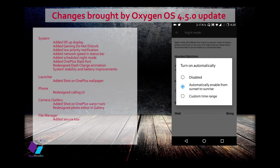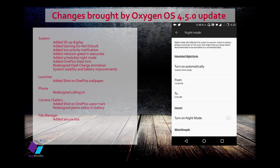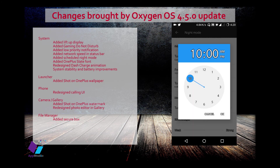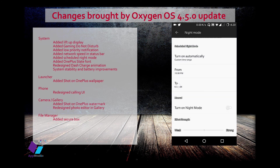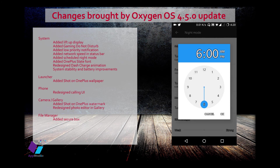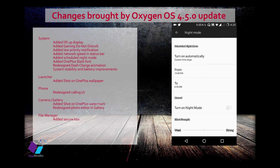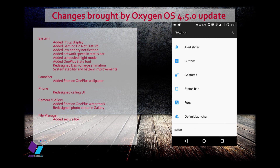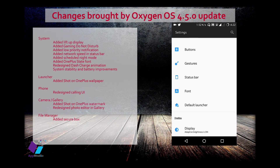You can also customize the night mode schedule with your own timing — for example, setting it from 10 p.m. to 6 a.m. This is a wonderful option. The next feature is a new font style that OnePlus has added, which you can find in Settings under Font.